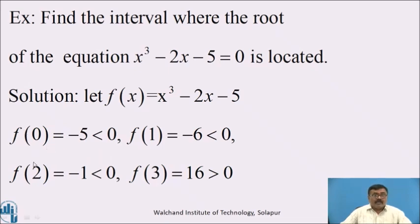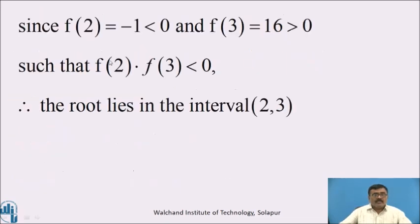f(0) = −5, which is less than 0. f(1) = −6, which is less than 0. f(2) = −1, which is less than 0. And f(3) = 16, which is greater than 0. Since f(2) = −1 < 0 and f(3) = 16 > 0, we have f(2) × f(3) < 0. Therefore, the root lies in the interval [2, 3].